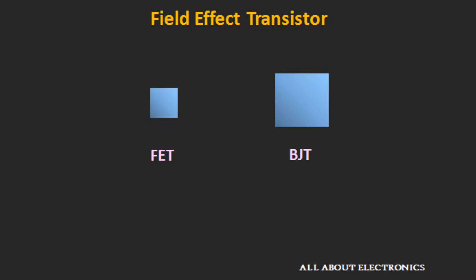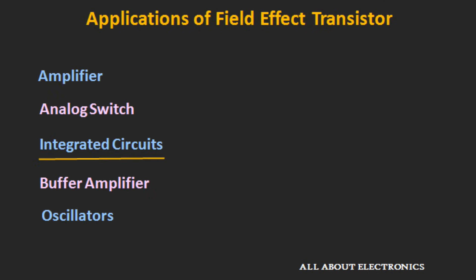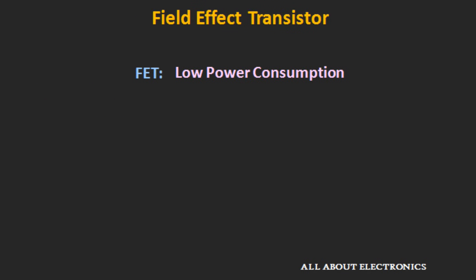The FETs are smaller in size compared to BJTs, and that's why they are commonly used in integrated circuits. In terms of power consumption, the power consumption of the FET is less than that of the BJT, and that's why they are preferred in many high-power applications as well as in computing applications, particularly where the required power consumption should be minimum.